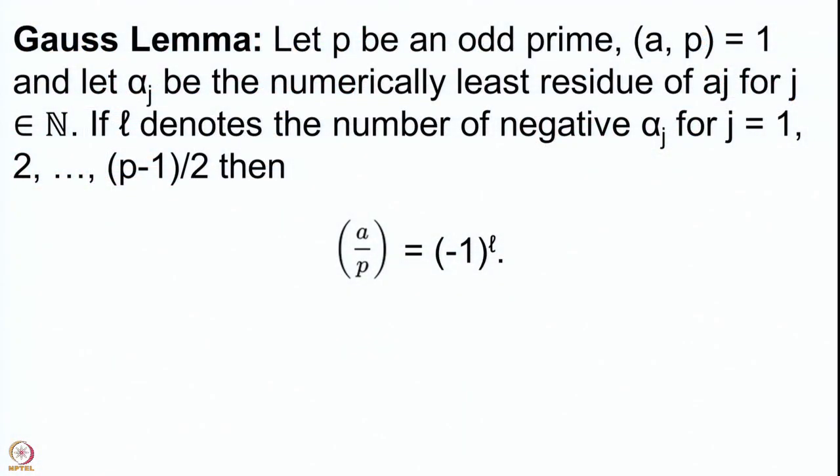Welcome back. We are discussing the quadratic reciprocity law and we proved the Gauss Lemma in the previous talk. Here is the statement of the Gauss Lemma that we have seen. Suppose we have an odd prime p and take any integer a which is co-prime to the odd prime p, and we compute these numerically least residues for various multiples of a from j equal to 1 to (p-1)/2.